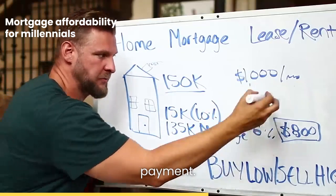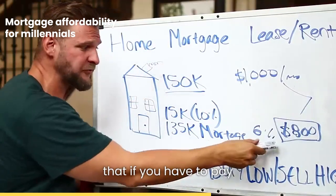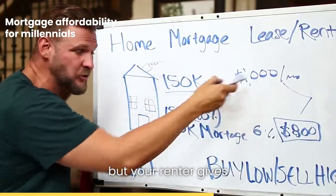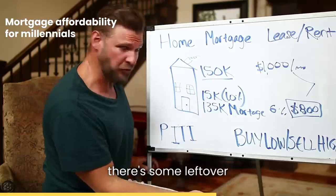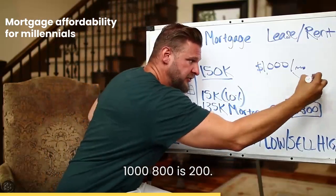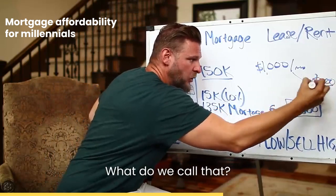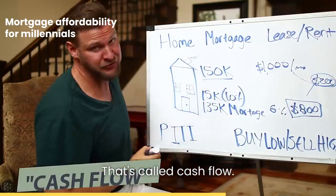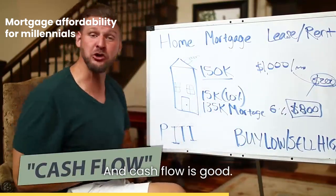If you have to pay the bank eight hundred every month but your renter gives you a thousand, there's some leftover money. A thousand minus eight hundred is two hundred. That's called cash flow, and cash flow is good.